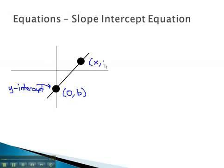The other point, let's just call x, y. I want to start by calculating the slope between these two points. Let's call the 0b, or the y-intercept, the first point, and the xy, the second point.